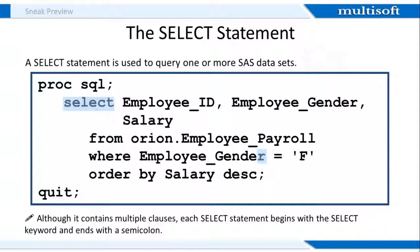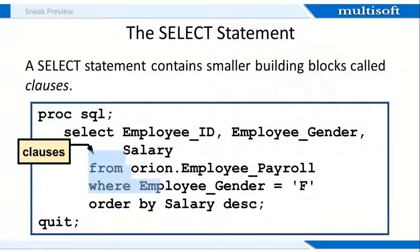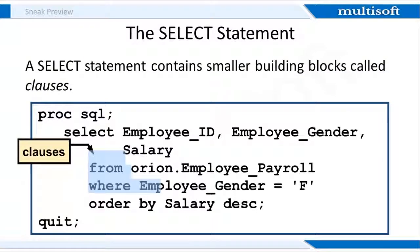In this query, the SELECT statement is used to refer to the employee ID, employee gender, and salary variables. FROM, WHERE and ORDER BY are the clauses within the SELECT statement. In the FROM clause, the orient.employee_payroll dataset is referred. With the WHERE clause, we subset the employee gender as female and then sequence the data in descending order using the DESC keyword within the ORDER BY clause.